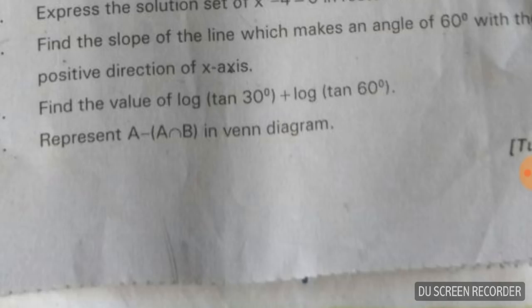Find the value of log(tan 30°) + log(tan 60°). log(tan 30°) = log(1/√3), log(tan 60°) = log(√3). Using the property log A + log B = log(AB), we get log(1/√3 × √3). The √3 cancels, giving log 1, which is 0.